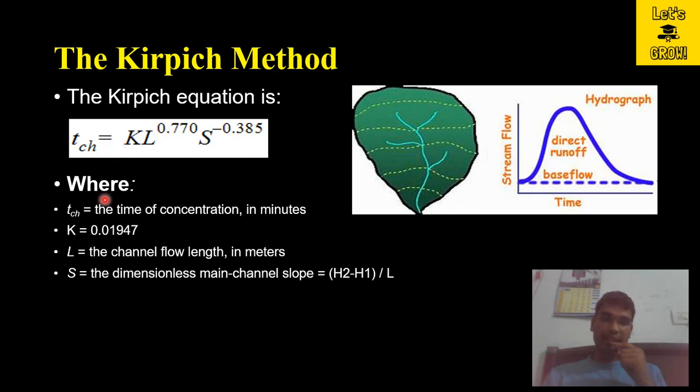Here K is the constant 0.01947, and L is the channel flow length—the length of the channel from the farthest point of the watershed to the outlet. Here S is the slope of that main channel, which is equal to (H2 - H1) divided by L. H2 minus H1 is the difference of elevations between two extreme points of the watershed divided by the length of the longest channel.